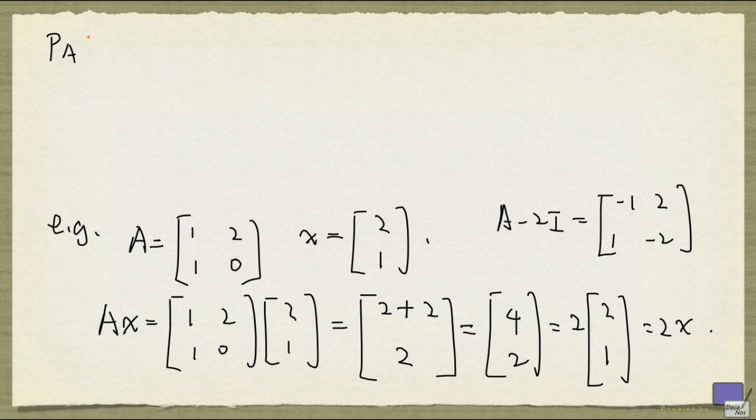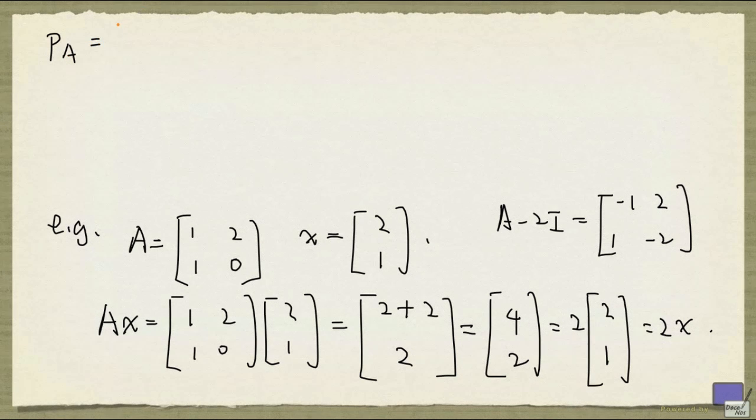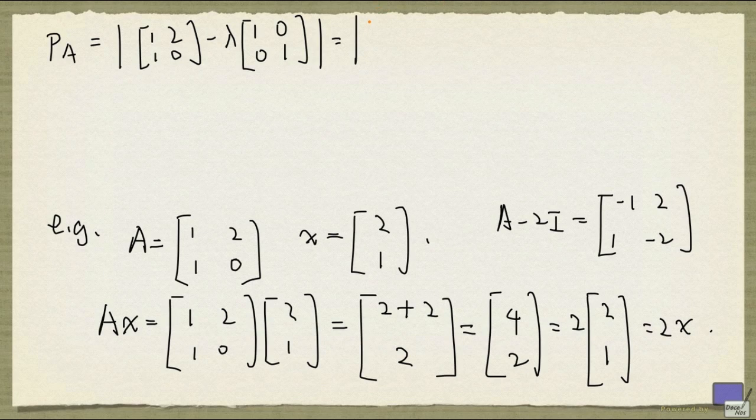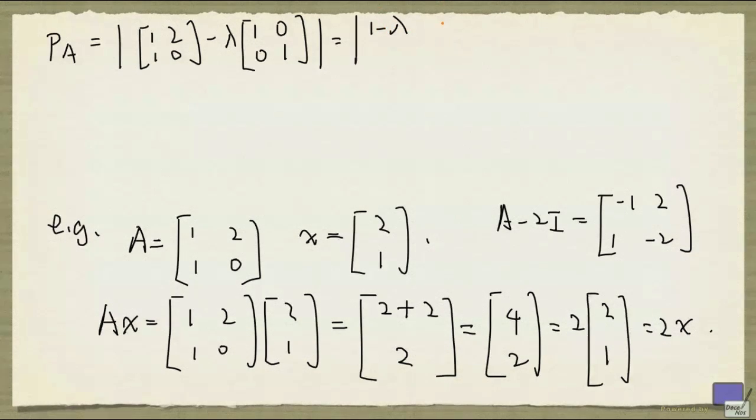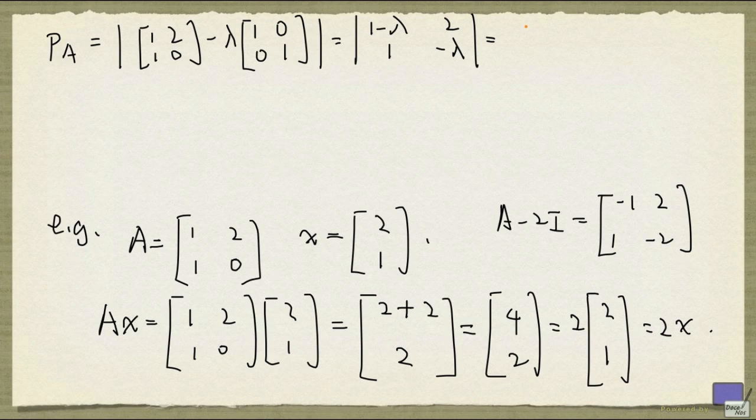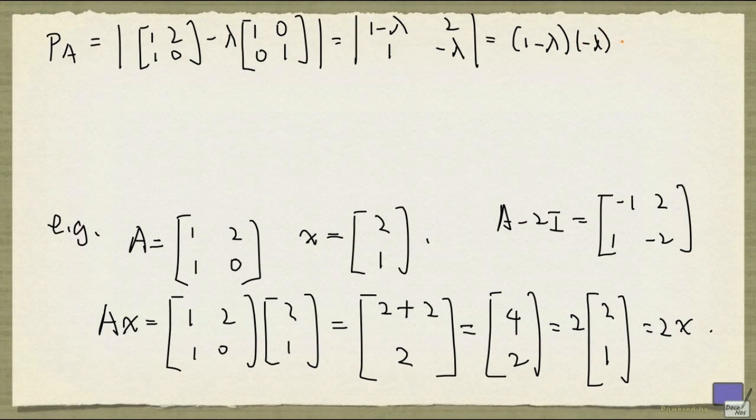So p subscript A is given by the determinant of [[1,2],[1,0]] minus lambda times the identity matrix. And that's the determinant of [[1 minus lambda, 2],[1, minus lambda]]. And expanding this using the formula for determinants of 2 by 2 matrices, we get that this is (1 minus lambda) times (minus lambda) minus 2 times 1. And that will give us lambda squared minus lambda minus 2.